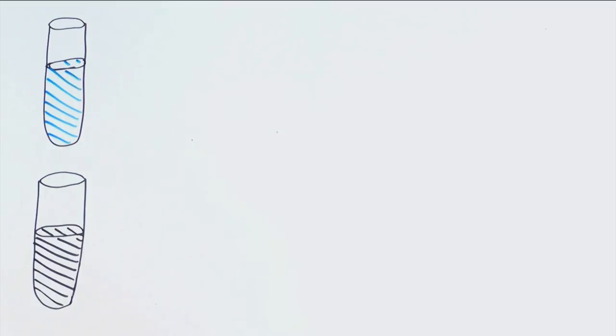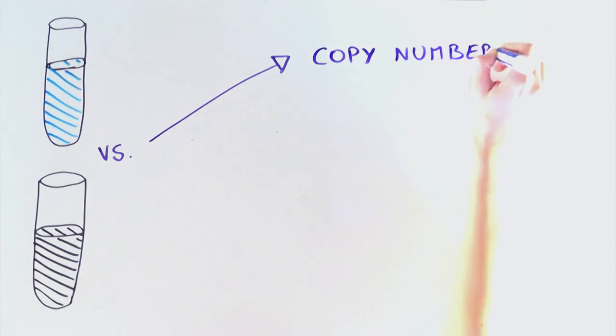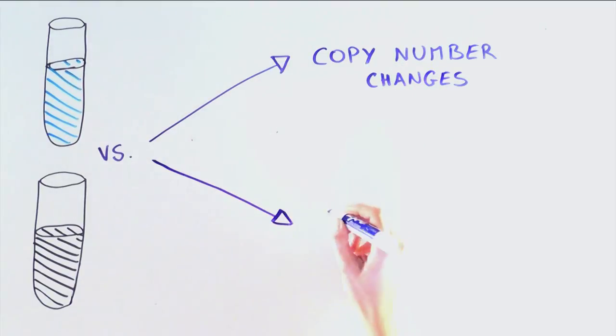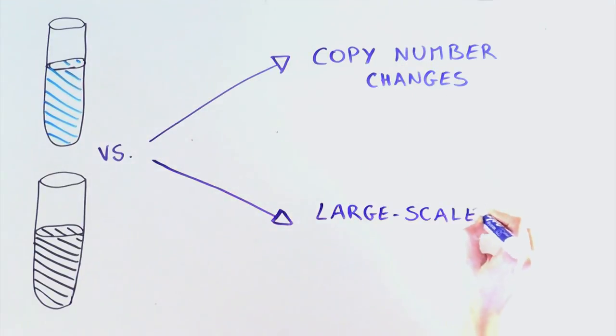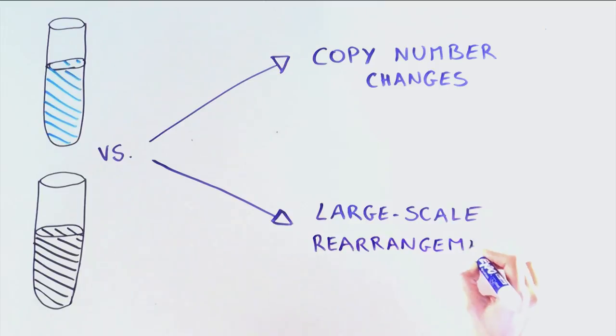So using CIRCOS, you can see how easy it is to compare different tumor samples with regards to copy number changes, but also large-scale genomic changes across the entire genome, looking for similarities and differences between samples.